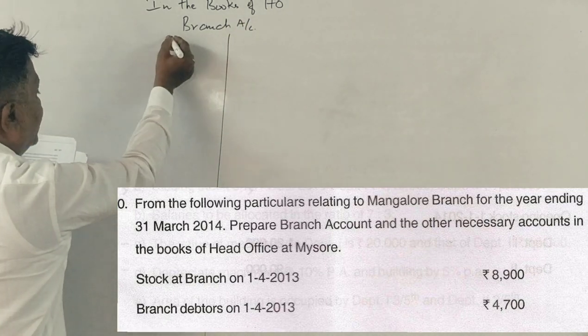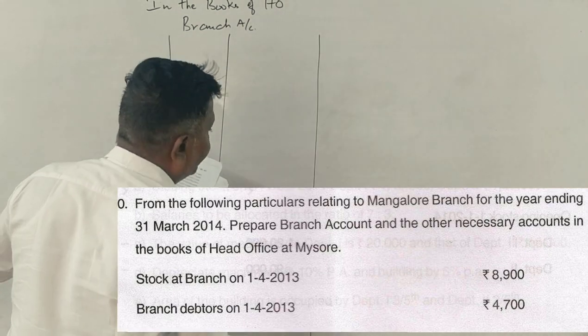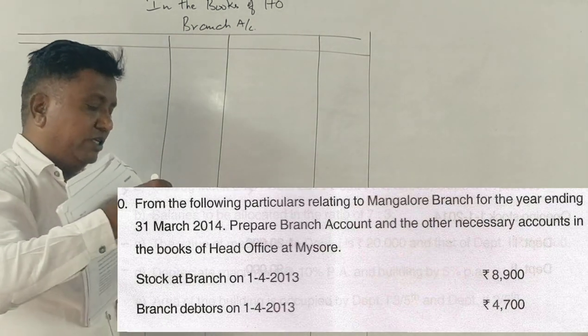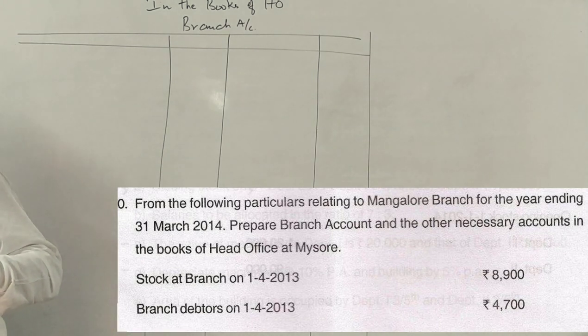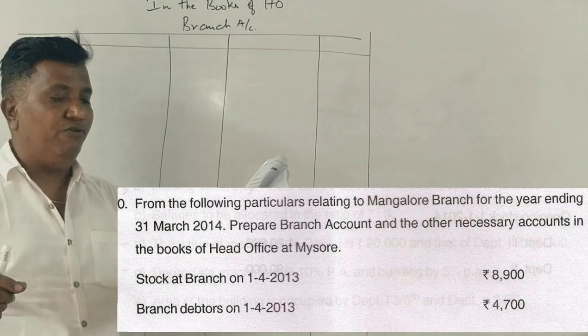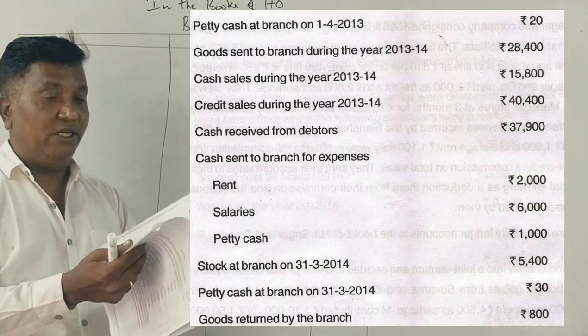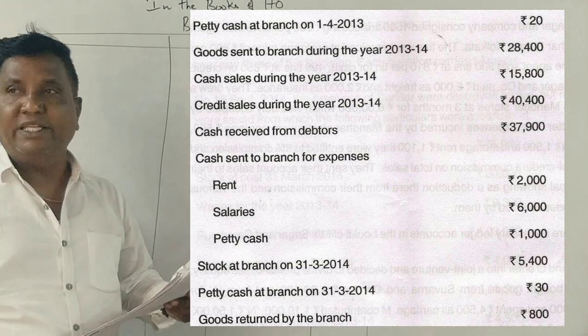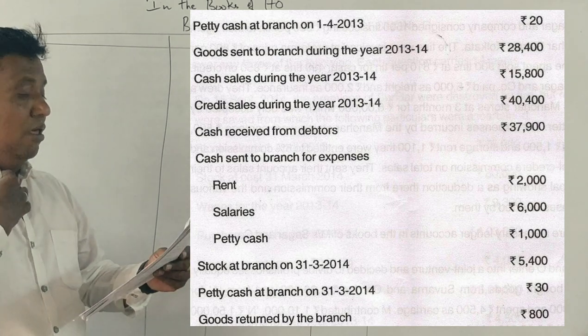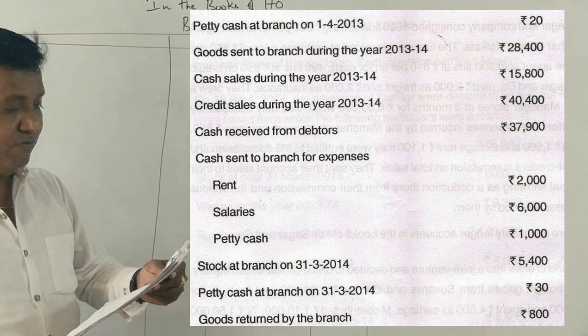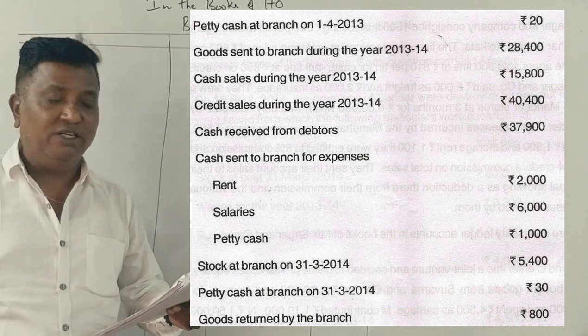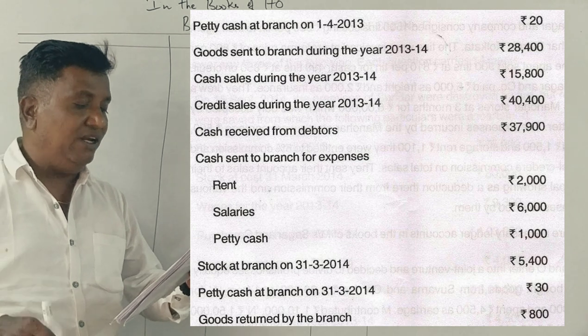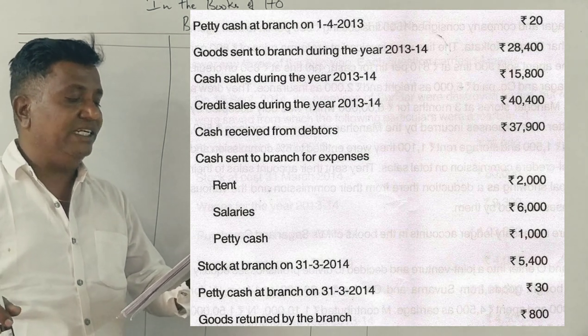This is a branch account. First of all, let's read the question. Stock at branch on 1-4-2013, branch debtors on 1-4-2013, petty cash at branch on 1-4-2013, goods sent to branch during the year 2013-14, cash sales during the year 2013-14, credit sales during the year 2013-14, cash received from debtors, cash sent to branch for expenses, stock at branch on 31st March 2014, petty cash at branch on 31-3-14, goods returned by branch.